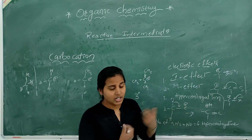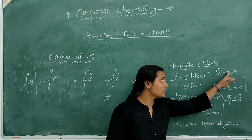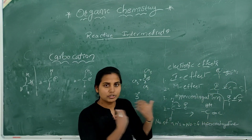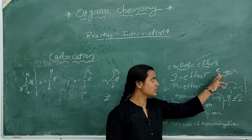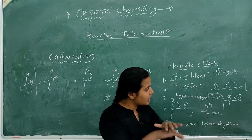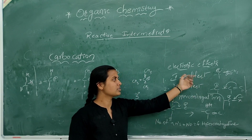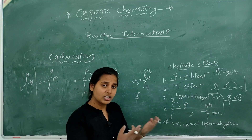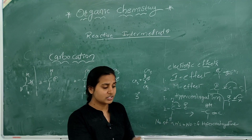With a carbocation present, the carbon is electron deficient. The sigma electrons shift towards the carbocation to stabilize it. In the inductive effect, there are plus-I groups and minus-I groups. Plus-I groups donate electrons and stabilize the carbocation, while minus-I groups withdraw electrons and destabilize it.